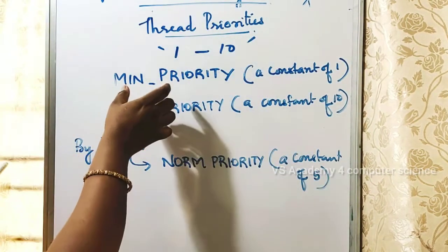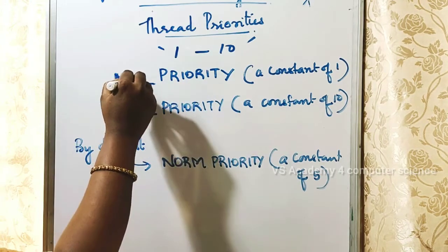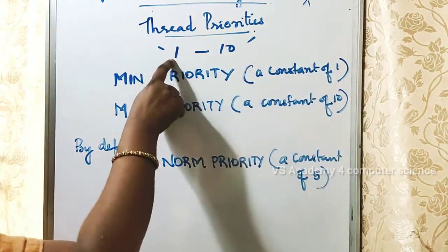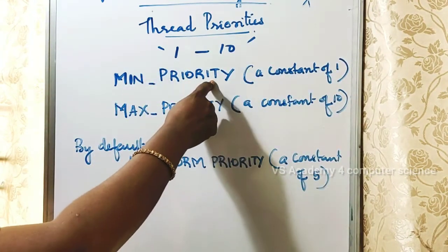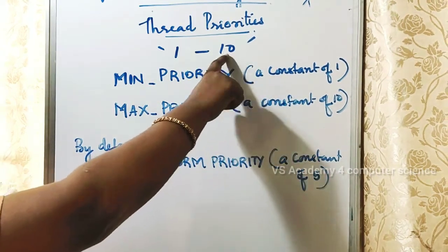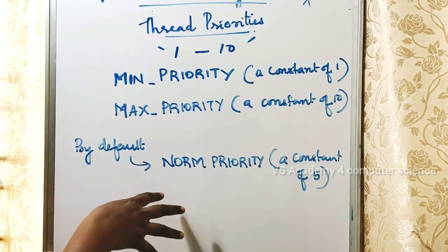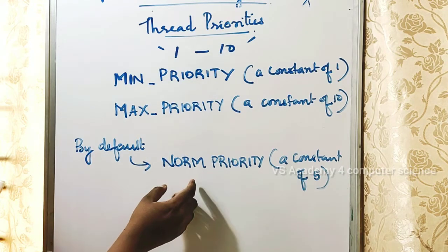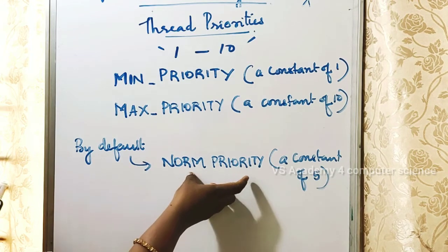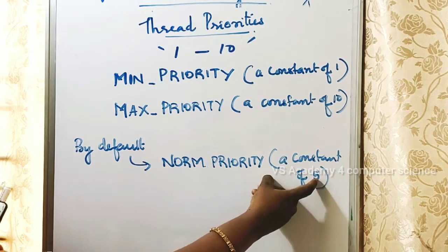The constant MIN_PRIORITY is the minimum priority, which has a value of 1. The constant MAX_PRIORITY is the maximum priority, which has a value of 10. The default priority assigned to a thread is called NORM_PRIORITY, which is a constant value of 5.